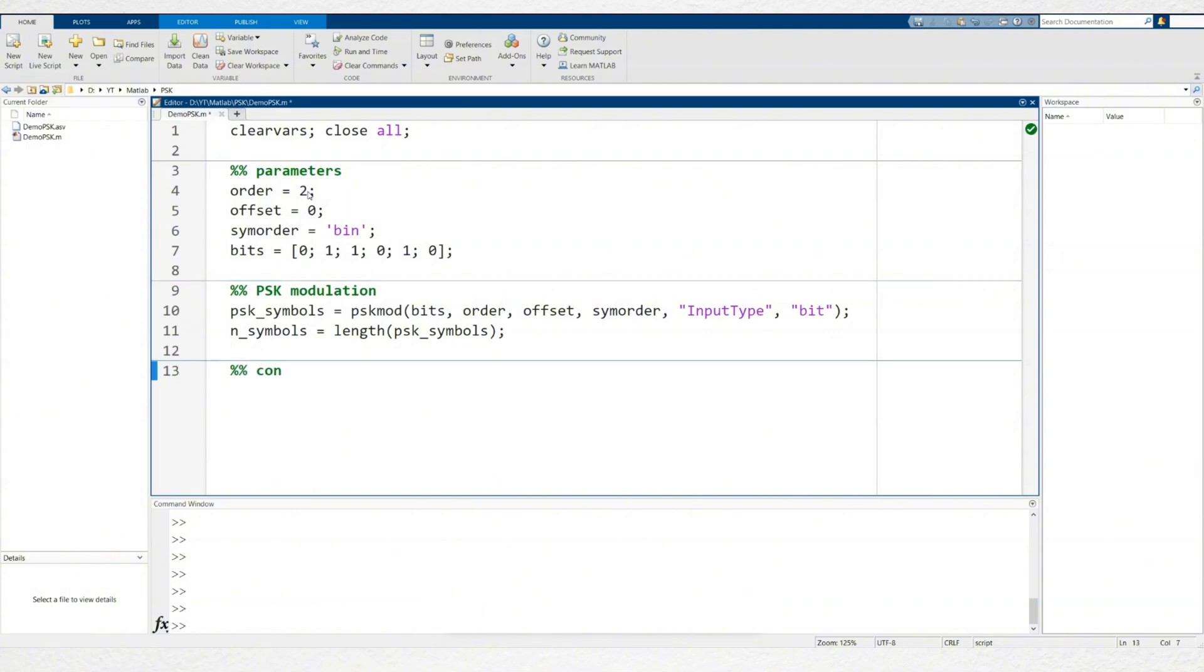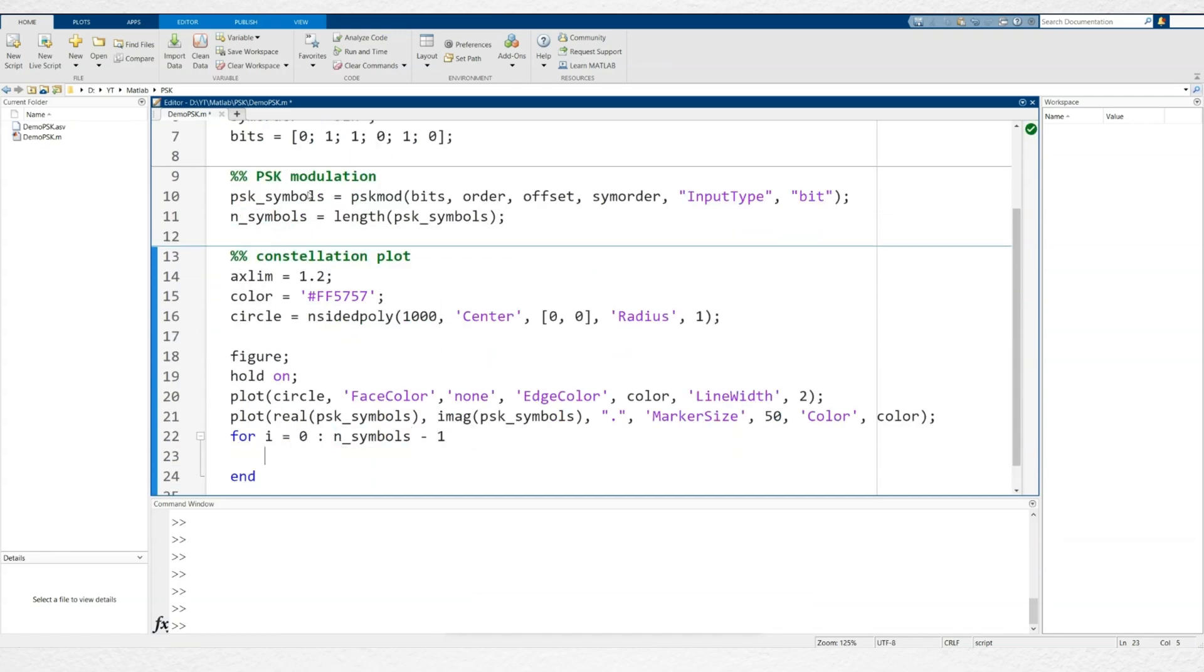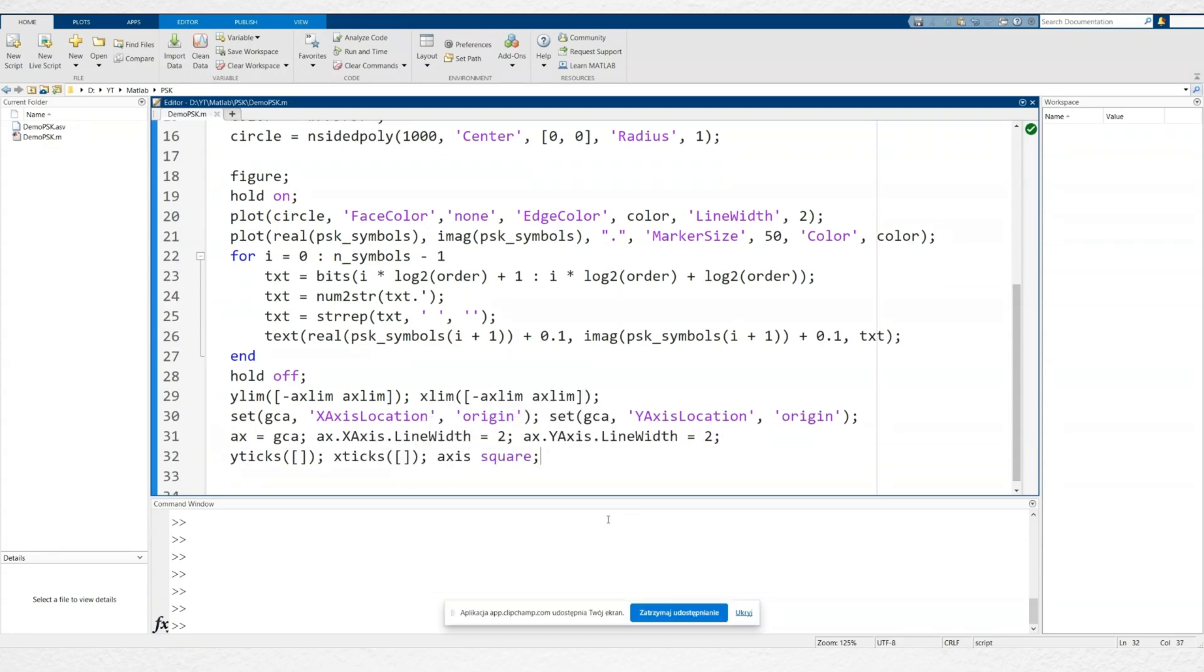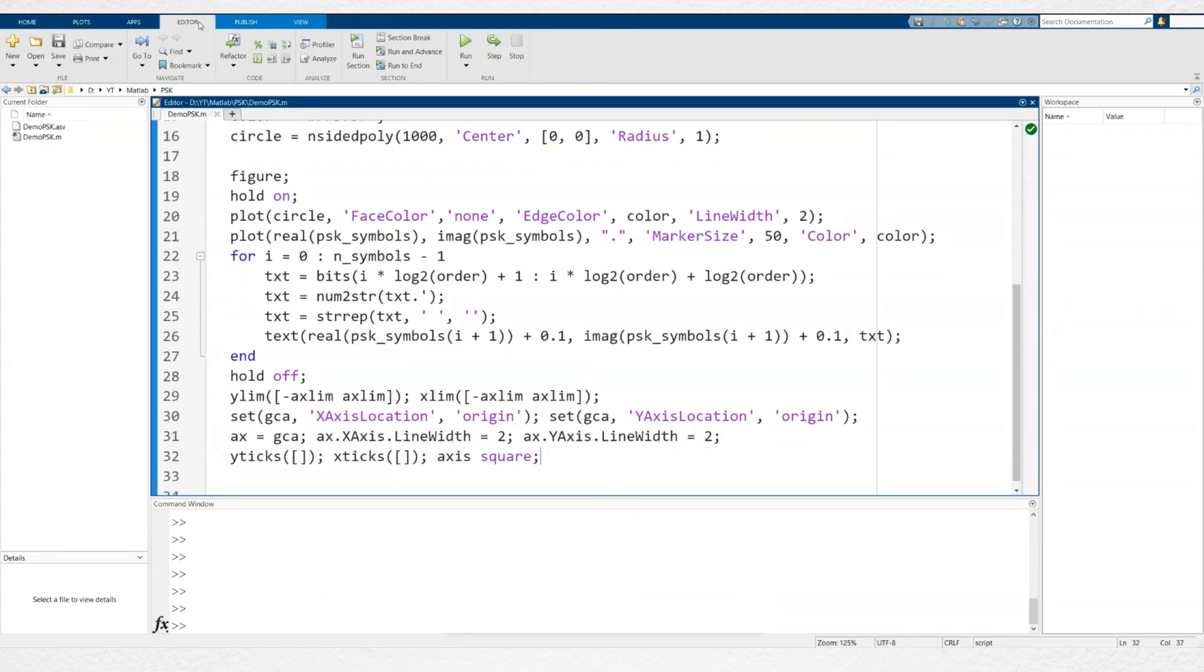To finish, we will display the constellation diagram. The first part of the code is ready. Let's run it.